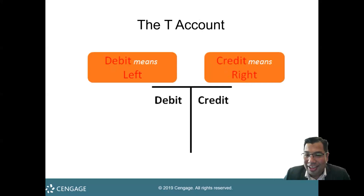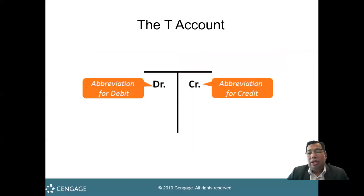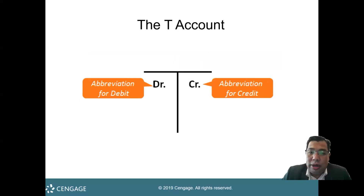Debit means left. Credit means right. It's very easy — debit left, credit right, and it's always like that. Debit is always left, credit is always right. In textbooks, you will see many kinds of abbreviations, but the most common ones are DR and CR. DR is a short form for debit, CR is a short form for credit. This is a Latin word.